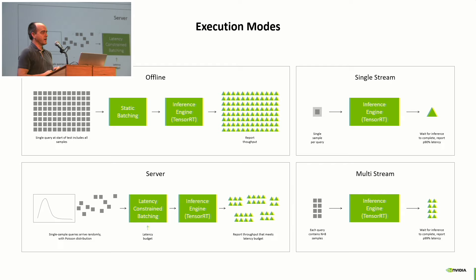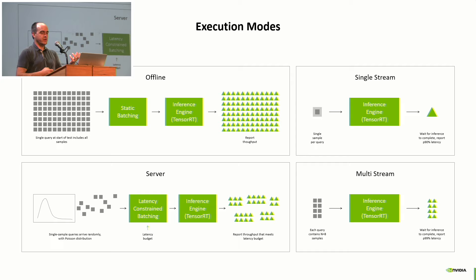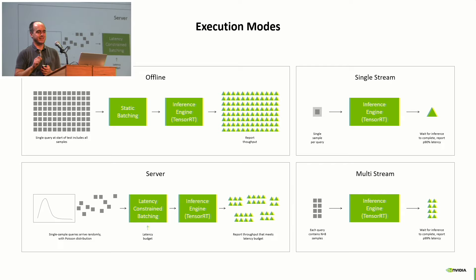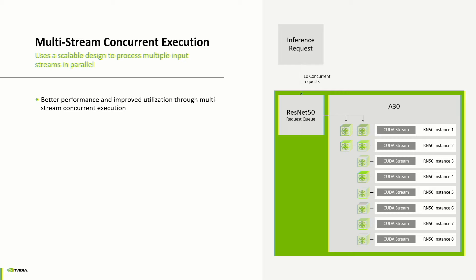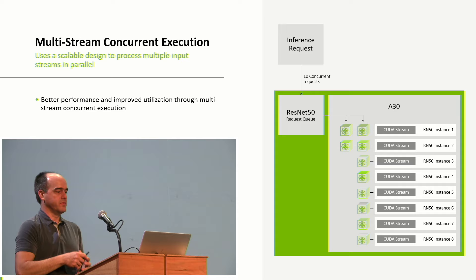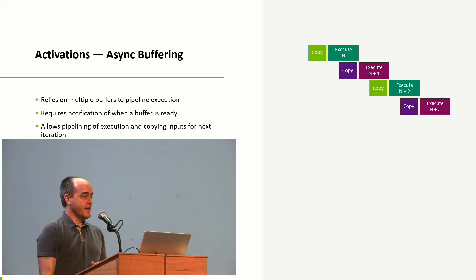The server scenario involves sending requests to a server. As long as you're within a given latency budget — usually around 100 milliseconds — you can batch requests and process multiple at a time. It's a fusion of offline and single stream: optimizing batch size under a given latency. Multi-stream is like self-driving cars — you have eight cameras coming in simultaneously, and you want to process all eight at the same instance and send results downstream at the same time.